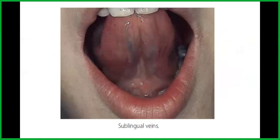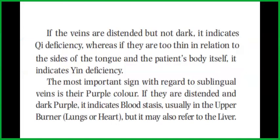You can see here the bluish sublingual veins. If the veins are distended but not dark, it indicates qi deficiency. Whereas if they are too thin in relation to the sides of the tongue and the patient's body itself, it also indicates qi deficiency.